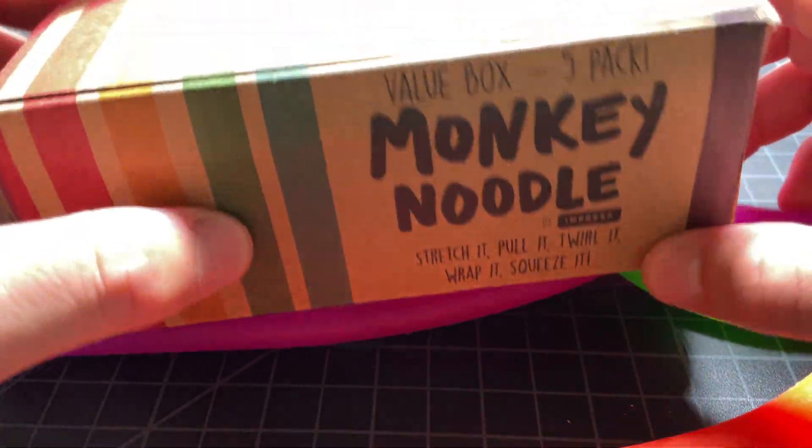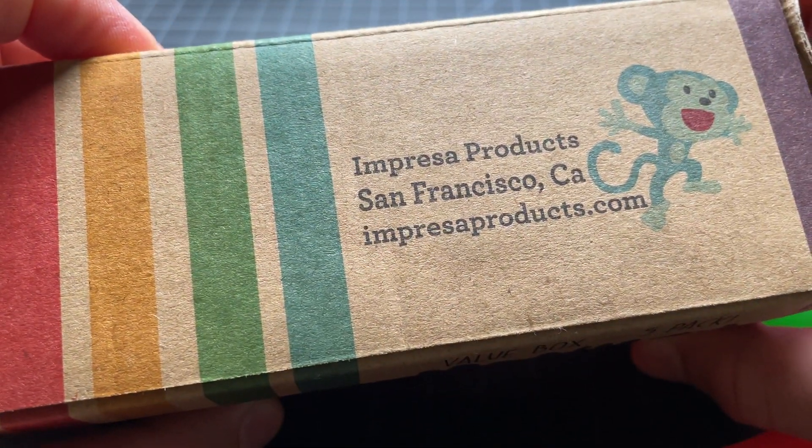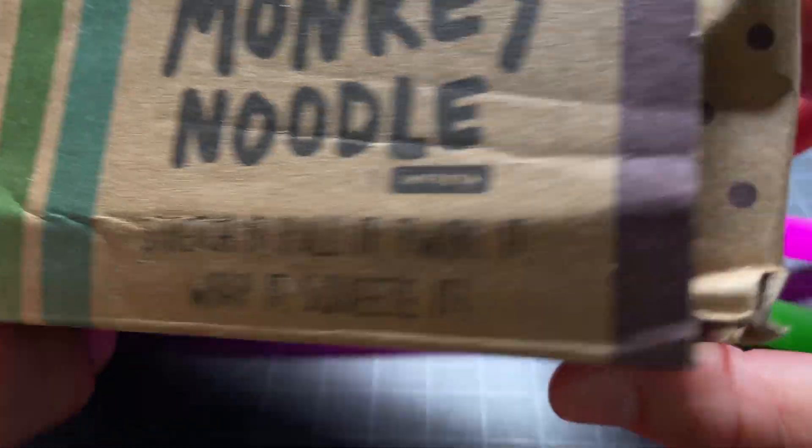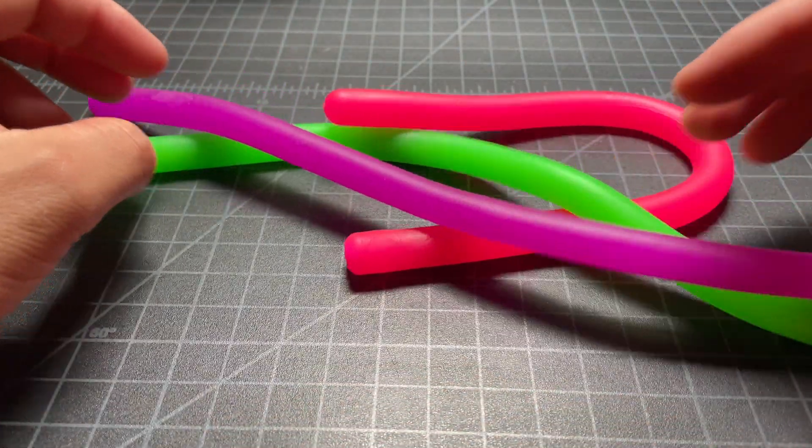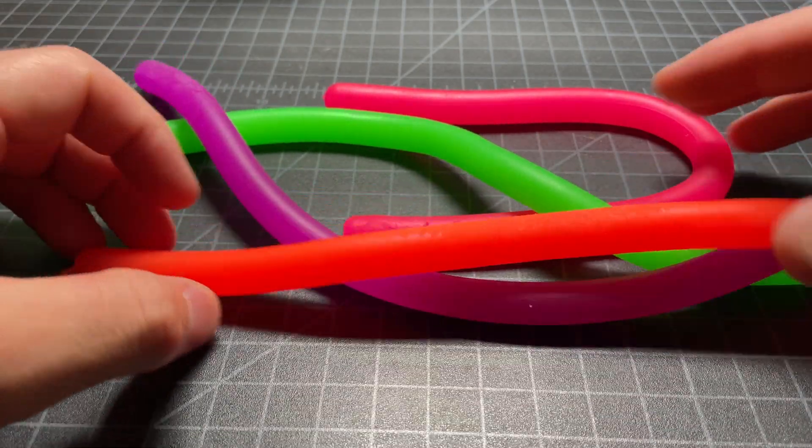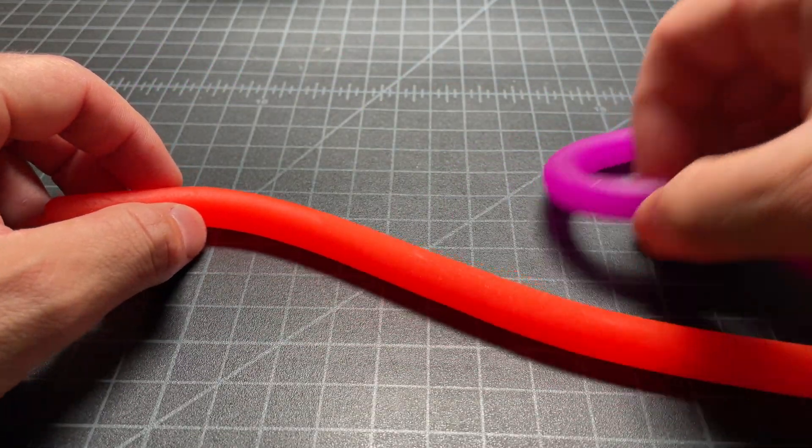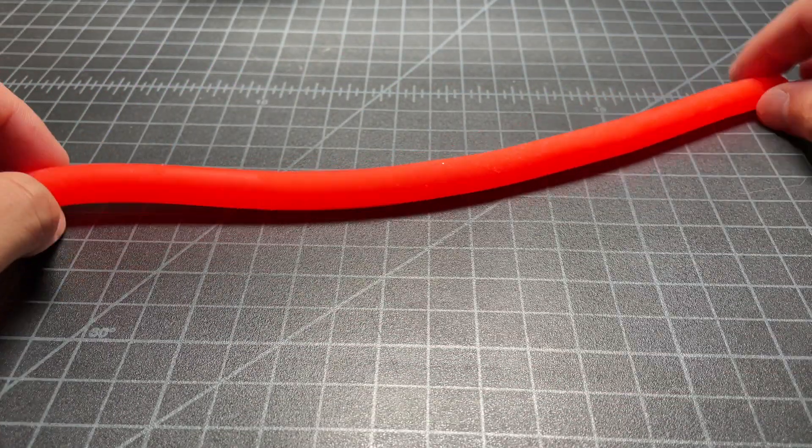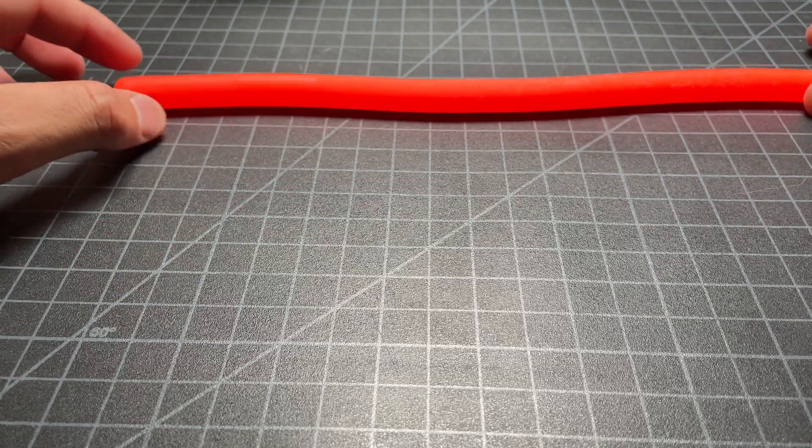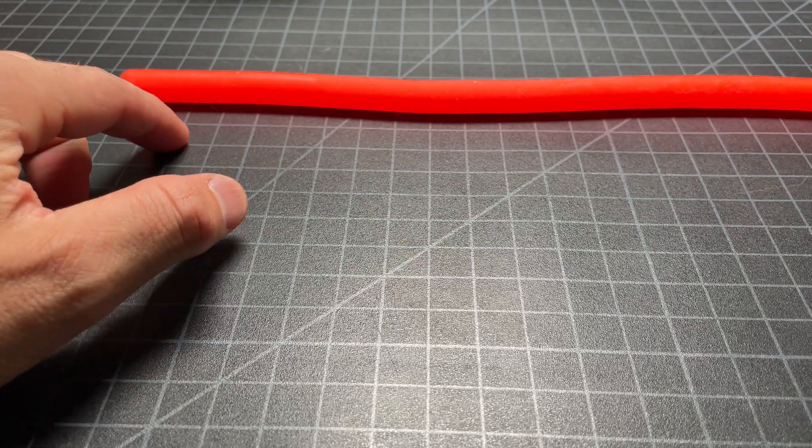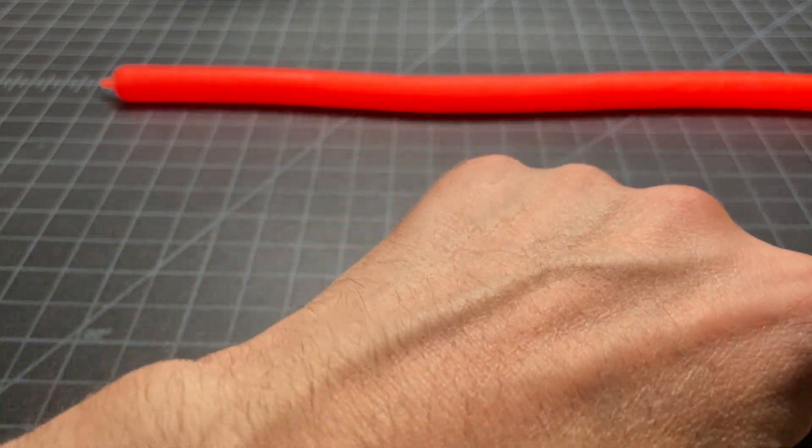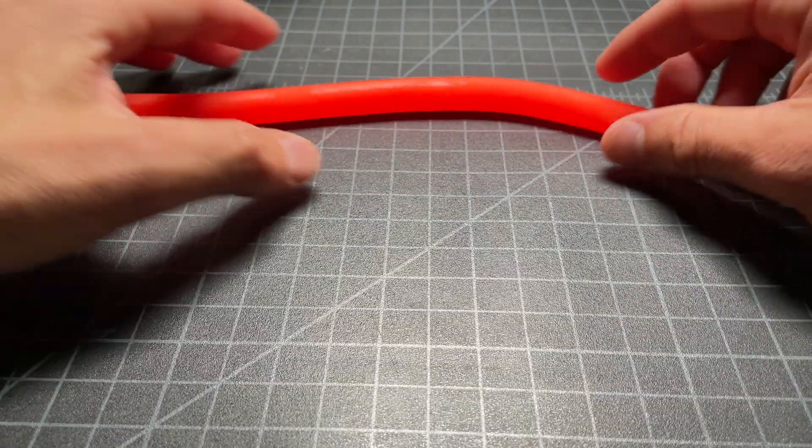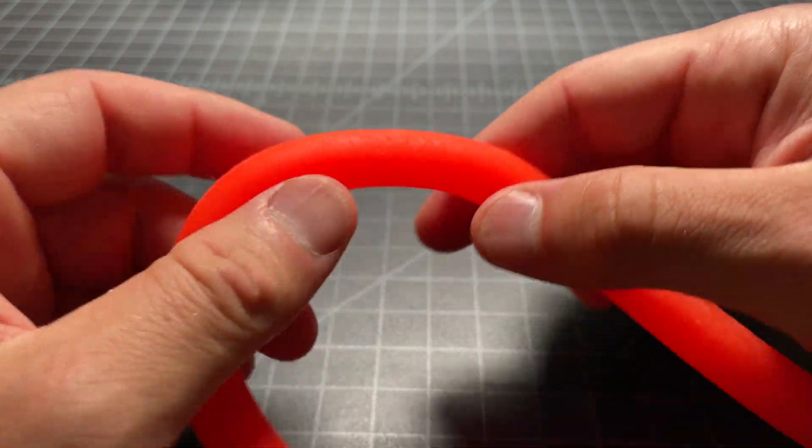It's from a company called Impressa. I never heard of them before. There's not really anything in the way of instructions. These are Monkey Noodles in a pretty small size, maybe the normal or medium size. The length here is one, two, three... about 11 inches long.